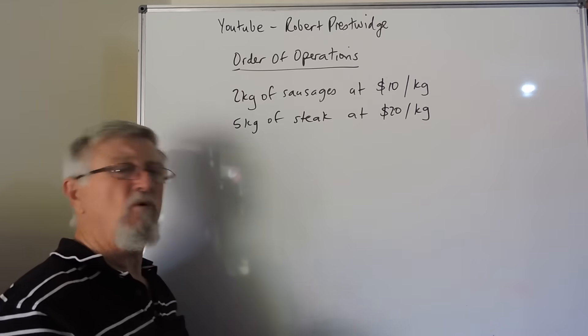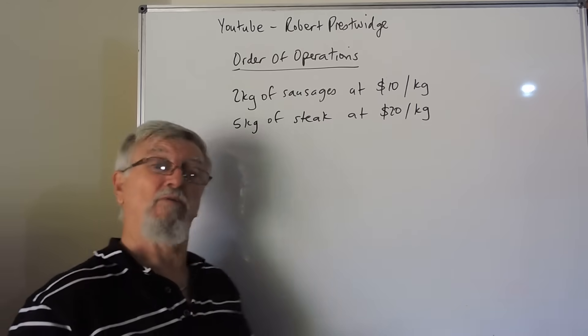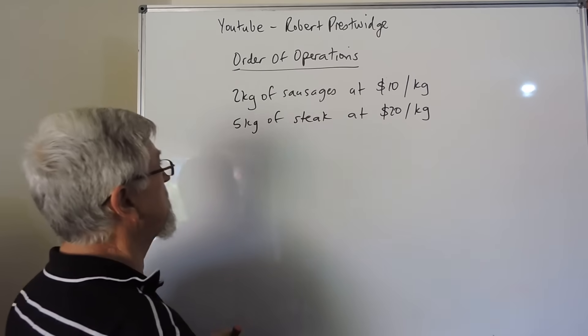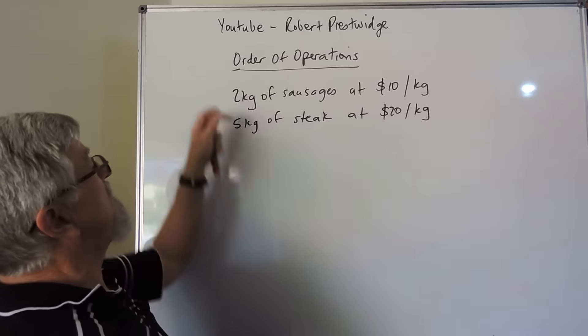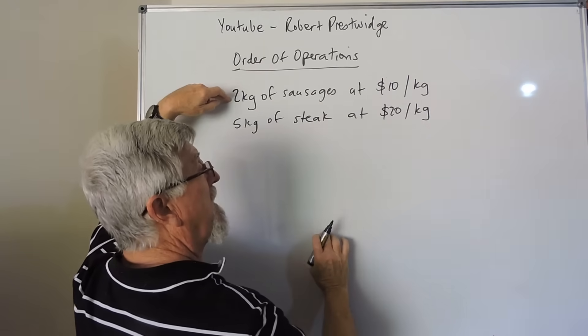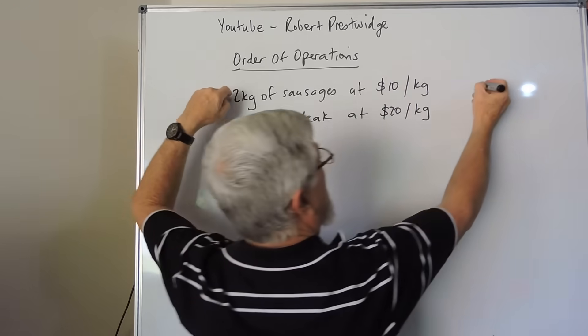Order of operations comes from normal life, not because we just want to make up weird rules that we apply whenever we want to as mathematicians. If you walk into a butcher and you said I want 2 kilograms of sausages at $10, most of you would look at that and go well that would be 2 lots of 10, that would be $20.